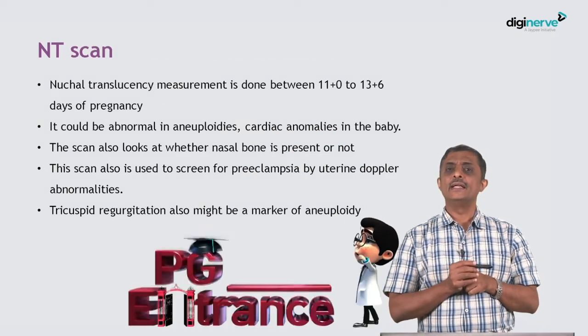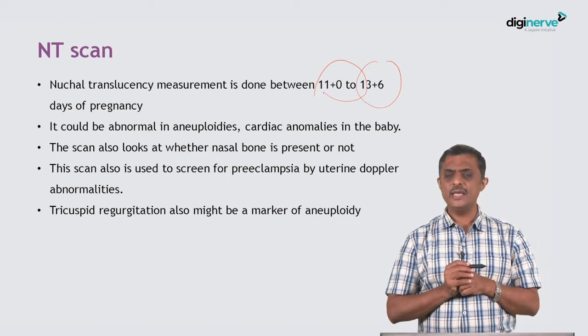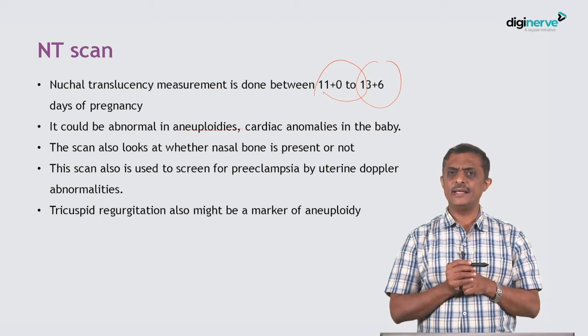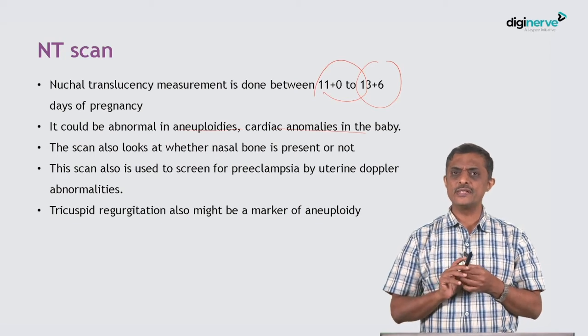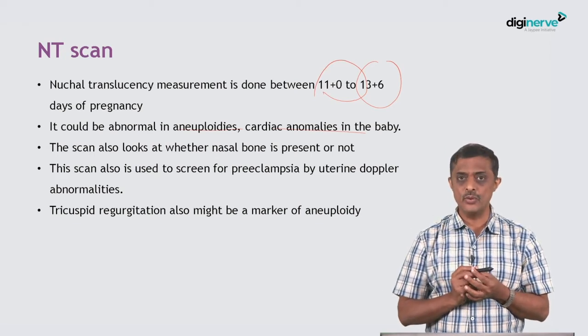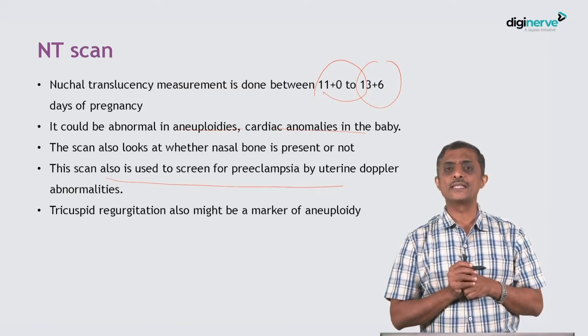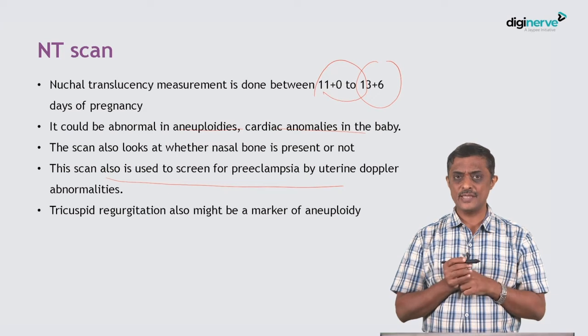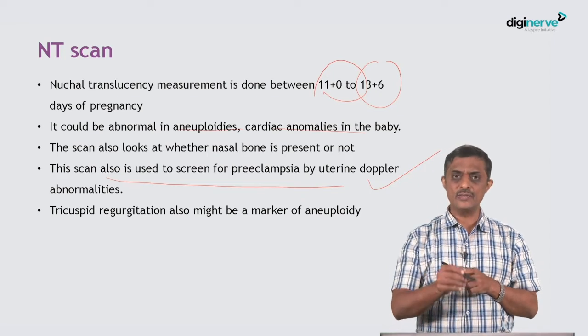The NT scan measures nuchal translucency between 11 weeks and 13 weeks 6 days. It is usually abnormal with aneuploidies and can also give a clue about cardiac anomalies. The same scan allows the sonologist to look for the presence or absence of the nasal bone — absence of nasal bone is a marker for aneuploidy. It is also used to predict preeclampsia by uterine artery Doppler at this period of gestation, and tricuspid regurgitation can be picked up as another marker for aneuploidy.